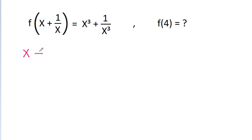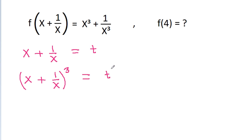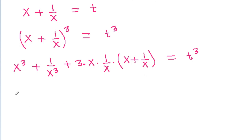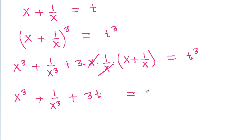So if we take x + 1/x equal to t and cube both sides, then (x + 1/x)³ will be equal to t³, which expands to x³ + 1/x³ + 3 times x times 1/x times (x + 1/x), equal to t³. Since x and 1/x cancel, and x + 1/x is t, this simplifies accordingly.